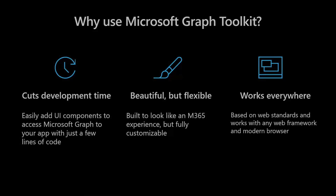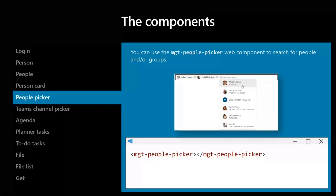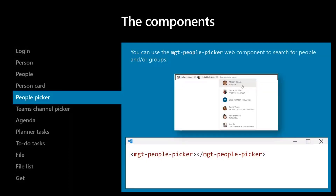Today we'll be talking about the people picker. It's a simple component but it drives so much value. How many times do you run across a scenario where you want to build a form that allows people to select users or groups from your organization? Maybe you're building an email client and want To and CC fields, or you want to assign somebody to a task. With all the different capabilities and settings on this control, you can really customize it. You drop MGT into your page and use the MGT people picker component.